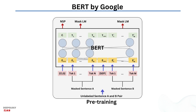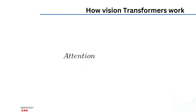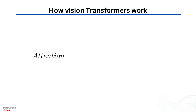BERT consists of 110 million parameters. Like GPT, it was trained on a specific task and can be fine-tuned for other tasks. In other words, the task used to pre-train BERT was to fill in the blanks.